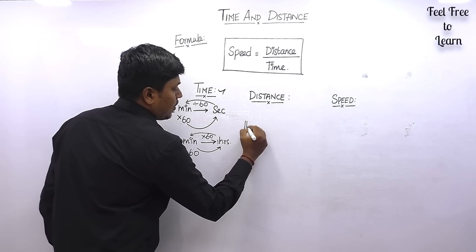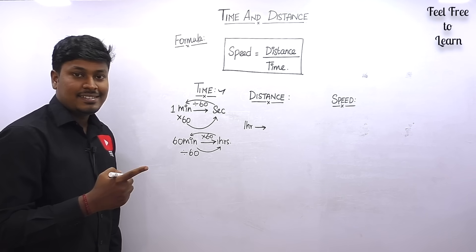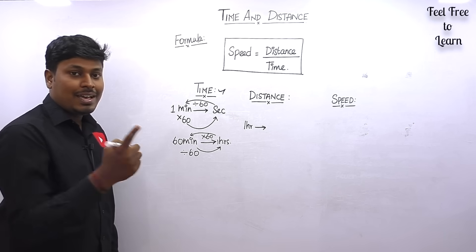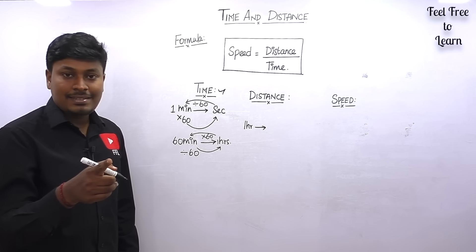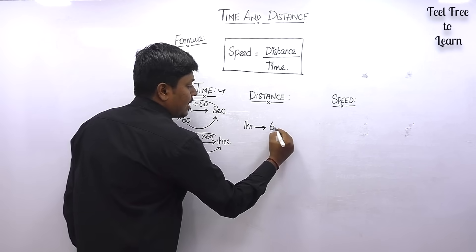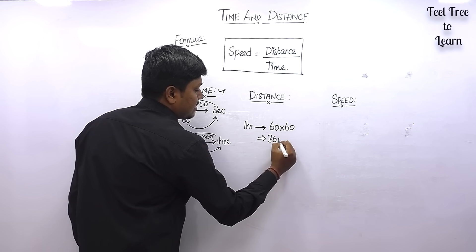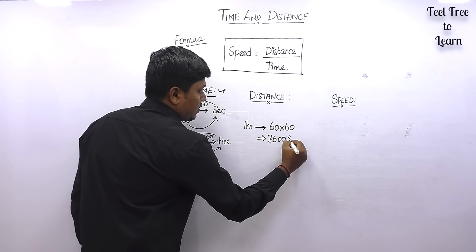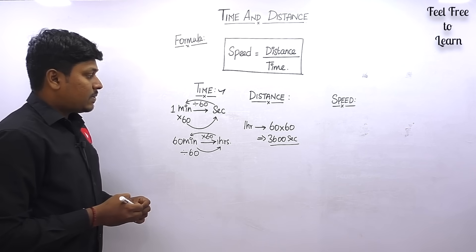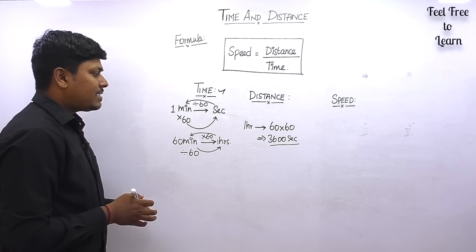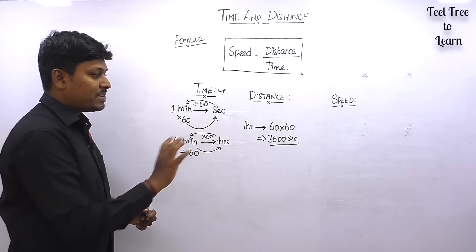How many seconds are there in 1 hour? For 1 hour we have 60 minutes, and each minute has 60 seconds, so 1 hour equals 60 × 60 = 3600 seconds. These three conversions — minutes to seconds, minutes to hours, and hours to seconds — are most important for solving time and distance questions.